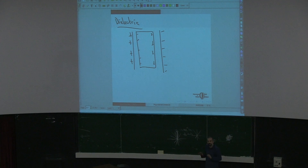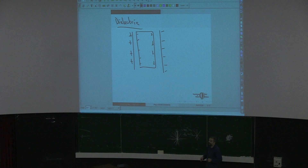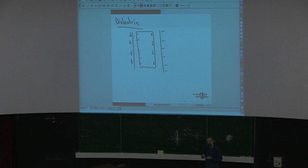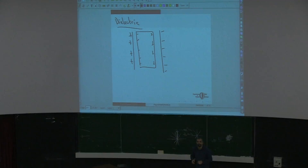We will not use the Gauss law when there are dielectrics. For us, the only property of the dielectric would be: if you have some electric field in a region and you put a dielectric in that region, the electric field just becomes E over the dielectric constant. That's the only thing we will need to know at this point. You will learn what happens when you put some insulators in a region where you have some electric charge, but if you go into the details, the problem really gets complicated.